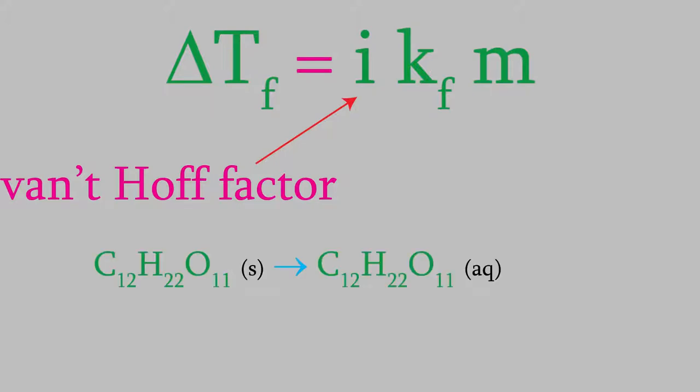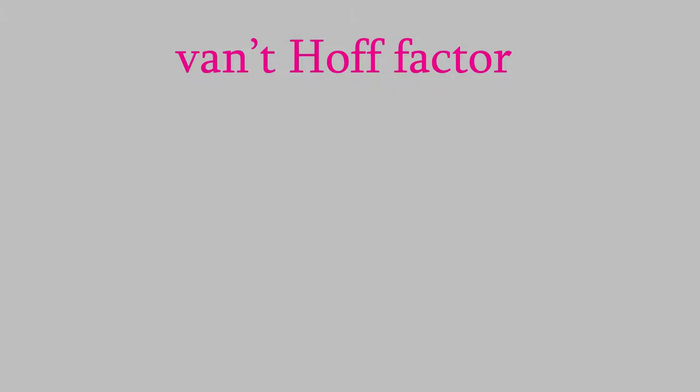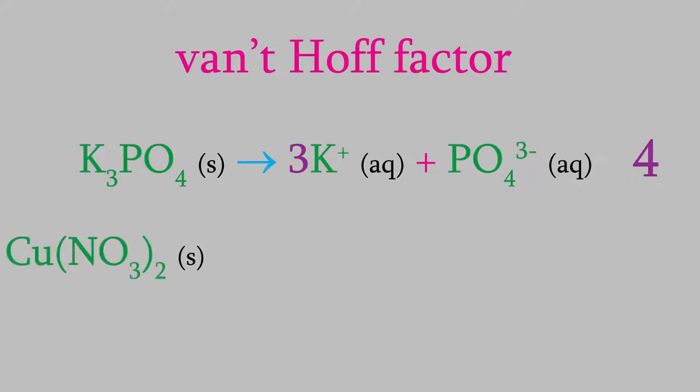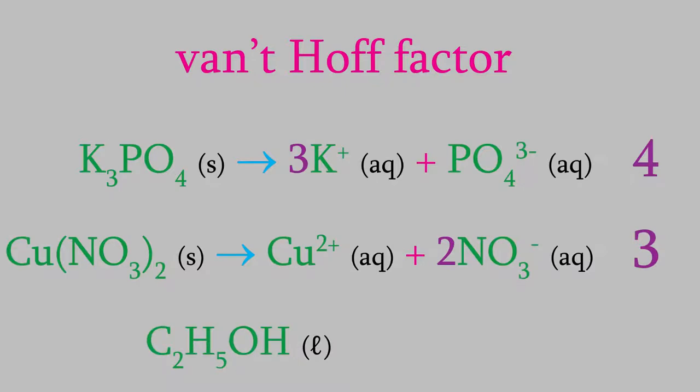It's the number of particles that a solute forms when it dissolves. So, for sucrose, the van't Hoff factor is equal to one. For sodium chloride, it's equal to two. Here are a couple more examples. Consider potassium phosphate. This is another ionic compound. When it dissolves, we get three potassium ions and a phosphate ion, for a total of four ions. That means the van't Hoff factor is four. How about copper nitrate? This one's another ionic compound. We'll get a copper ion and two nitrate ions. That's a total of three, so copper nitrate has a van't Hoff factor of three. Meanwhile, ethanol is C2H5OH. Since all the elements are nonmetals, this is a molecular compound, which means it doesn't produce ions when it dissolves. That means the van't Hoff factor is one.